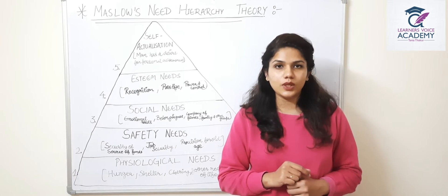First is physiological needs. Physiological needs basically include hunger, shelter, clothing, and other necessities for life. We need things like food, clothes, and shelter. These are called basic needs. When these basic needs are fulfilled, the person moves to the next level.